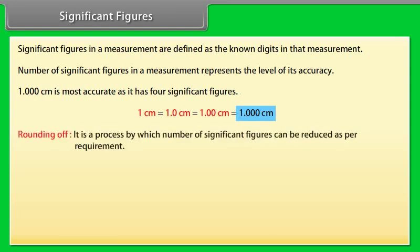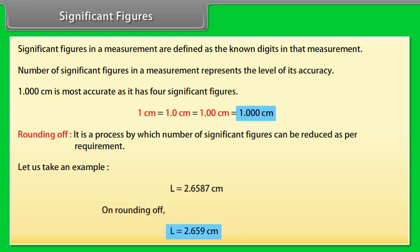Let us take an example. 1.000 centimeter is most accurate as it has four significant figures. Rounding off. It is a process by which number of significant figures can be reduced as per requirement. Let us take an example. L is equal to 2.6587 centimeters. On rounding off, L is equal to 2.659 centimeters.